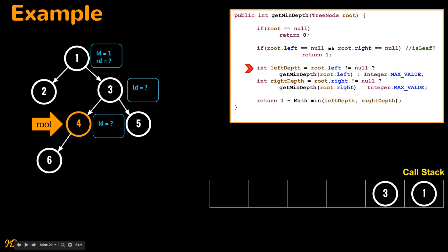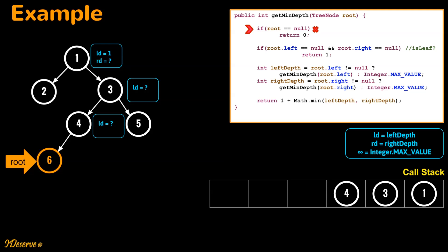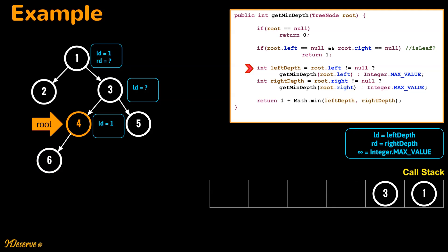We check if the left subtree of node 4 is null — it is not, so we recursively call get min depth for the left child and store the function state in the call stack. Now root is pointing to node 6. We check if root is null — no. We check if root is a leaf — yes, so we return 1. We go back to the call stack where root was node 4. Left depth is 1. Since the right child of node 4 is null, we set right depth to Integer.MAX_VALUE, because a null child of an internal node cannot be considered for min depth. Finally we return 1 plus the minimum of left and right depth, so 2 is returned.